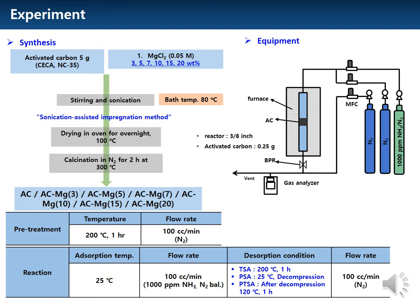3, 5, 7, 10, 15, and 20 weight percent magnesium were attached to activated carbon by sonication impregnation method. Activated carbon with nothing impregnated was named AC, and that with 3 weight percent magnesium impregnated was named ACMG3. The ammonia adsorption test was carried out as a breakthrough test for TSA, PSA, and PTSA processes, and the breakthrough test conditions are shown in the table below.